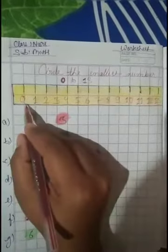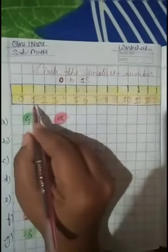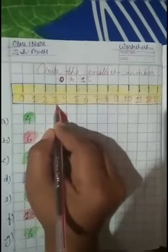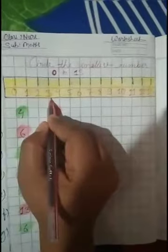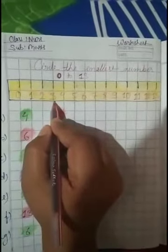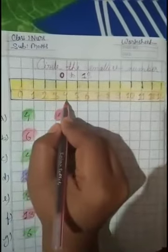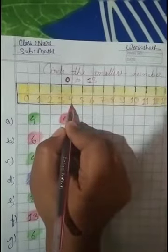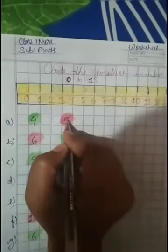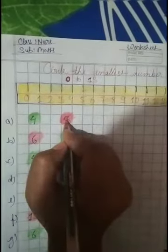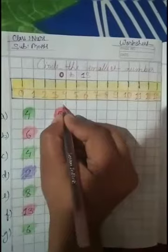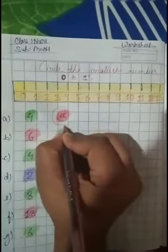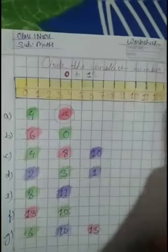So here we see: 0, 1, 2, 3. 3 is the smallest here. After 3 comes 4. So 3 is the smallest number, and we have to circle 3.